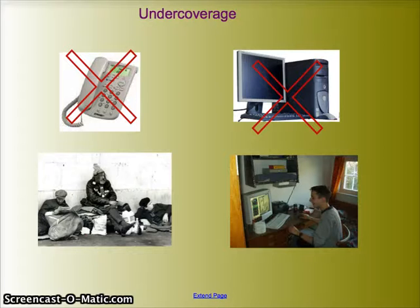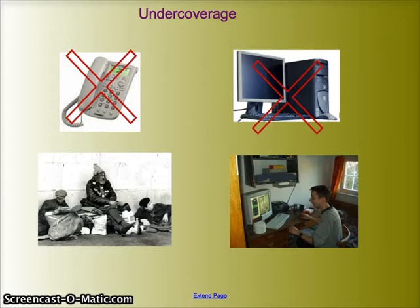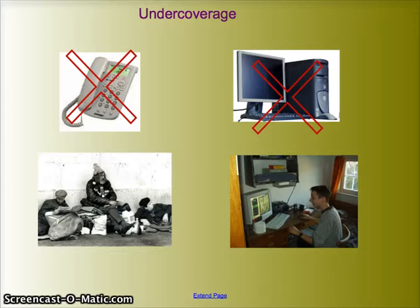Under-coverage means we've defined a population that we'd like to get to and get opinions from, but for whatever reason we can't reach them. So if I'm doing a phone survey but a certain element of the population doesn't have phones, or my methodology only includes landlines and I miss people who have cell phones, or I'd like to do a survey via computer with pop-ups but not everybody has a computer at home — under-coverage means we're missing a part of the population that we'd intended to get to.